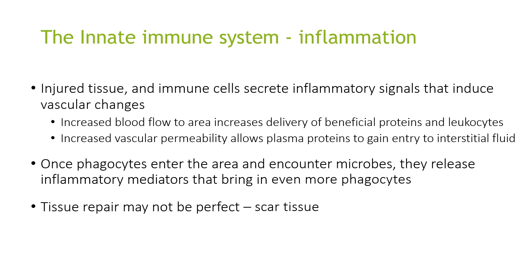Injured tissue and immune cells secrete inflammatory signals that induce vascular changes during inflammation. This leads to increased blood flow to the area, increasing delivery of beneficial proteins and leukocytes. There is also increased vascular permeability which allows plasma proteins to enter the interstitial fluid. Once phagocytes enter the area and encounter microbes, they release inflammatory mediators which bring in even more phagocytes. Tissue repair may not be perfect, resulting in scarred tissue.